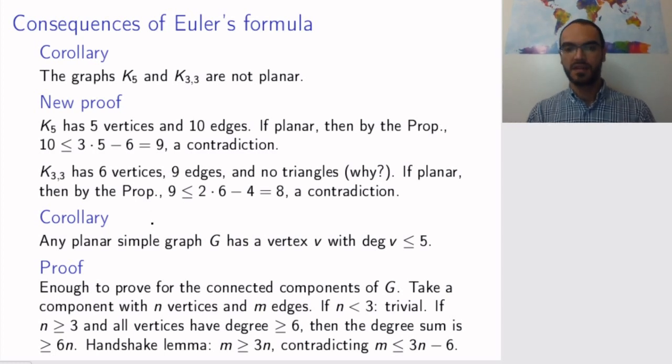Yeah, but if m is greater than or equal to 3n, then this contradicts what we know from the previous theorem, that m has to be smaller than or equal to not only 3n, but 3n minus 6. So there must be a vertex of degree at most five. The assumption that there is no such vertex, that all degrees are at least six, led to a contradiction.